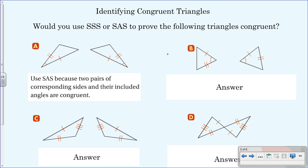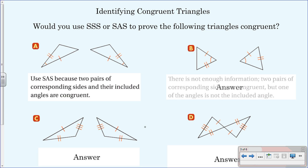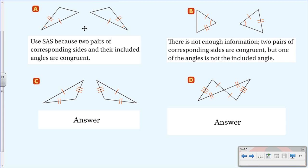For letter B: we only have two sides marked congruent, so we cannot use SSS. Can we use SAS? One of the angles is included between its two sides, but the other angle is not the included angle between those two sides. So we cannot use either postulate — there is not enough information. Two pairs of corresponding sides are congruent, but one of the angles is not the included angle.